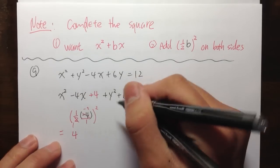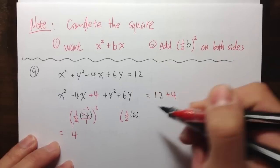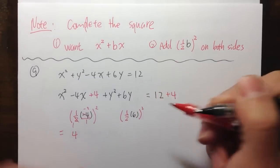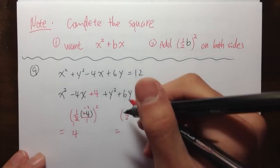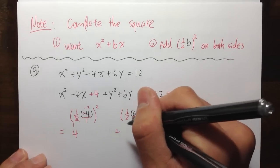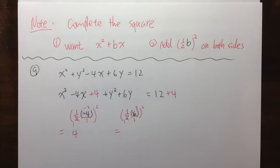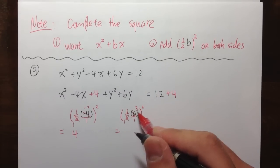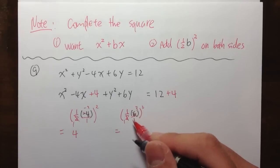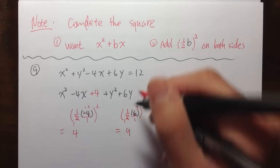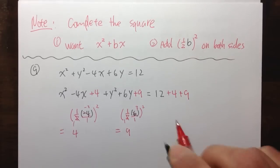Do the same for the y. I need to take one half times 6, then square that. One half times 6 — writing 6 as 6 over 1, 2 goes into 6 three times — so inside you have just 3. Then 3 squared equals 9. So you add 9 on the left side and also on the right-hand side — plus 9 on both sides.